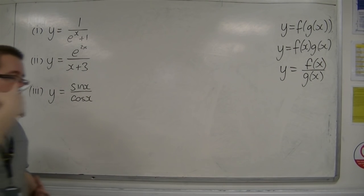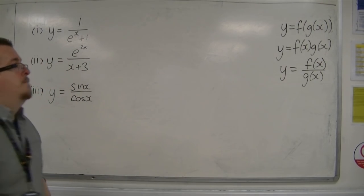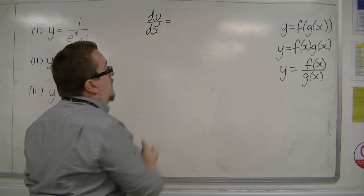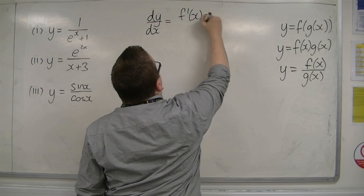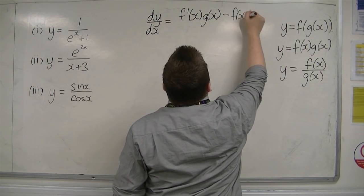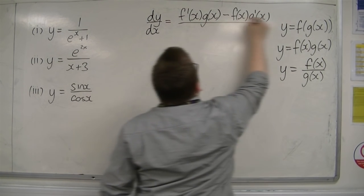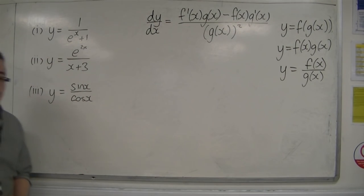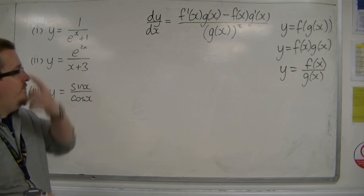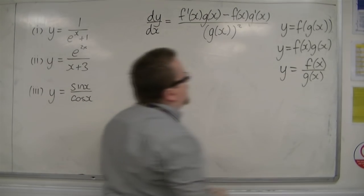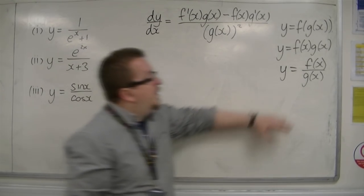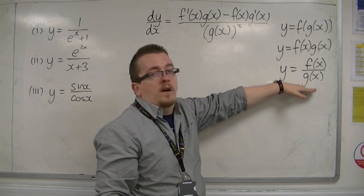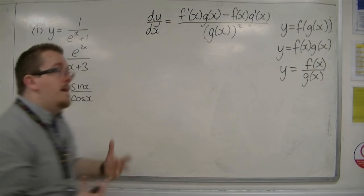The formula for differentiating a quotient is: dy by dx is equal to f prime of x times g of x, take away f of x times g prime of x, all over g of x squared. Now this is a pretty horrendous looking formula when you first see it. The way I like to remember it is: the bottom times the derivative of the top, take away the top times the derivative of the bottom, over the bottom squared.